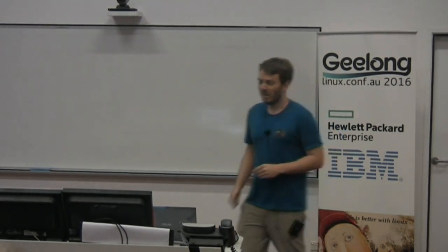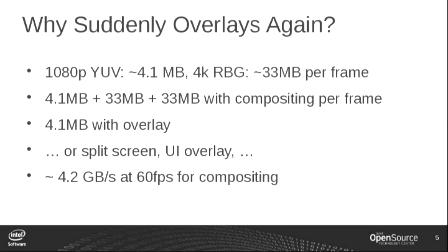The real problem is video overlays. We got rid of them on the Linux desktop because they looked ugly, but they're actually useful. A YUV plane is not just a different color space — it has less information per pixel, using only half the storage per pixel compared to RGB. For a 1080p video stream, that's about four megabytes per frame. If you want to display it on a 4K tablet, that's over 30 megabytes per frame because of the higher resolution and more data per pixel.